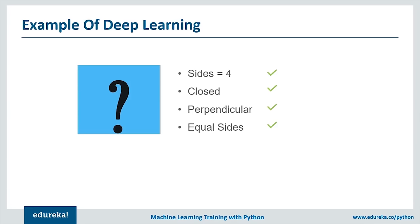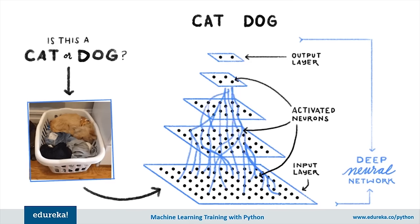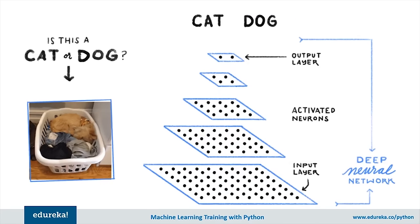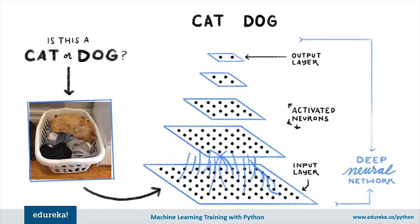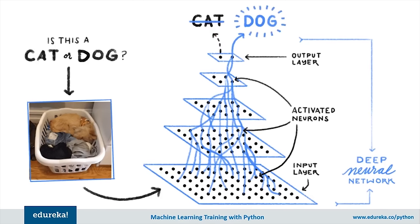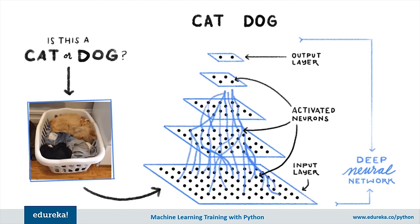For example, recognizing whether an image is a cat or dog: with machine learning, you manually define features like whiskers, pointed ears, or tail shape and let the system identify which features are more important. With deep learning, it automatically finds the most important features for classification, without manually specifying them. AI is the bigger picture, and machine learning and deep learning are its sub-parts.